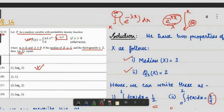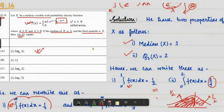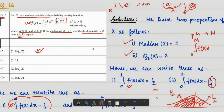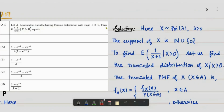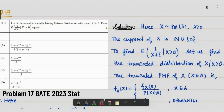The main idea of problem 16 is: given that the pth quantile is q, integrating the PDF from zero to q yields area p. So the median means the area below 1 is one-half, and the third quartile means the area below 2 is three-fourths.